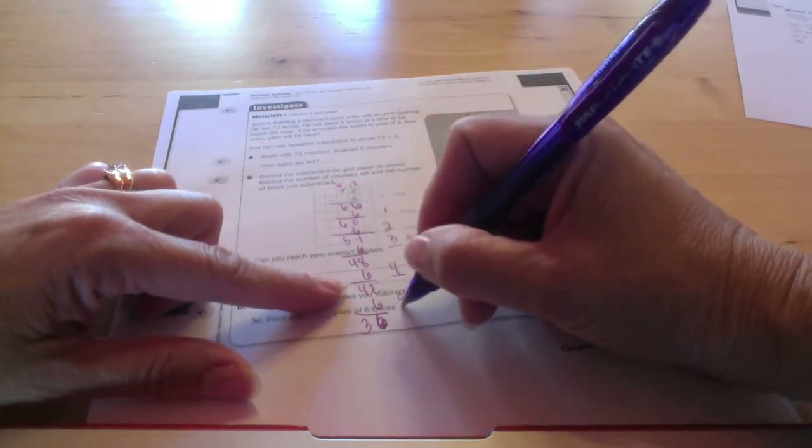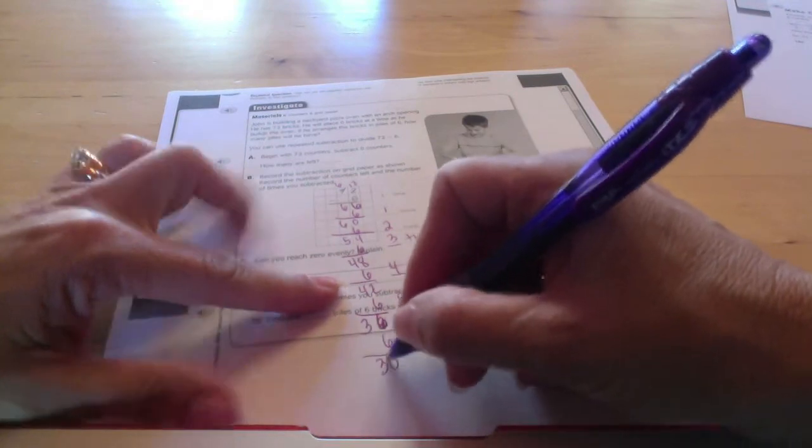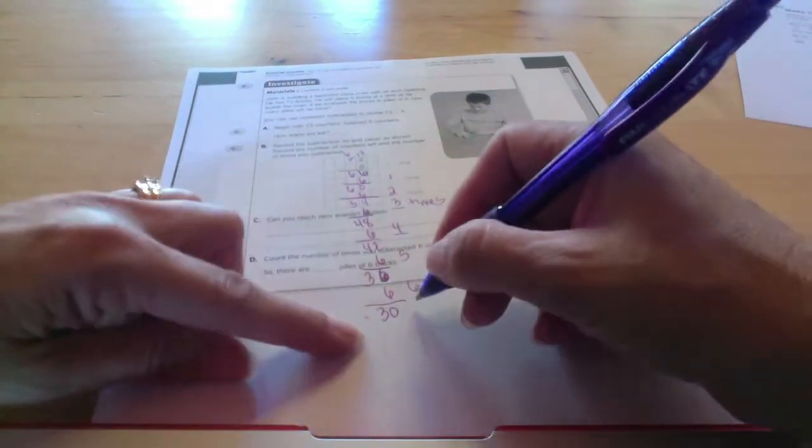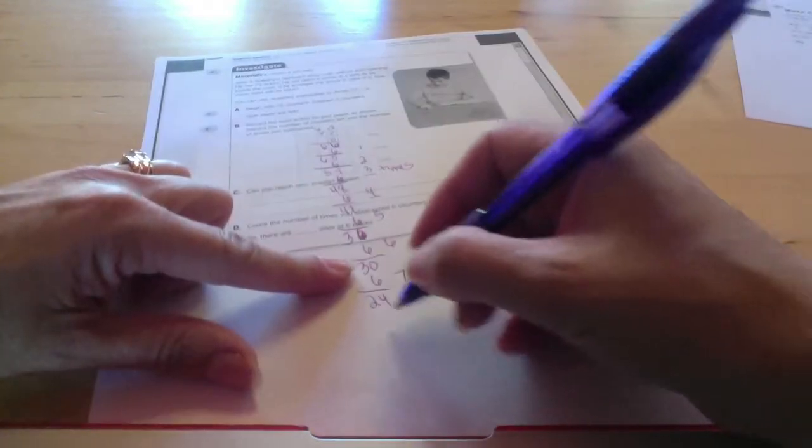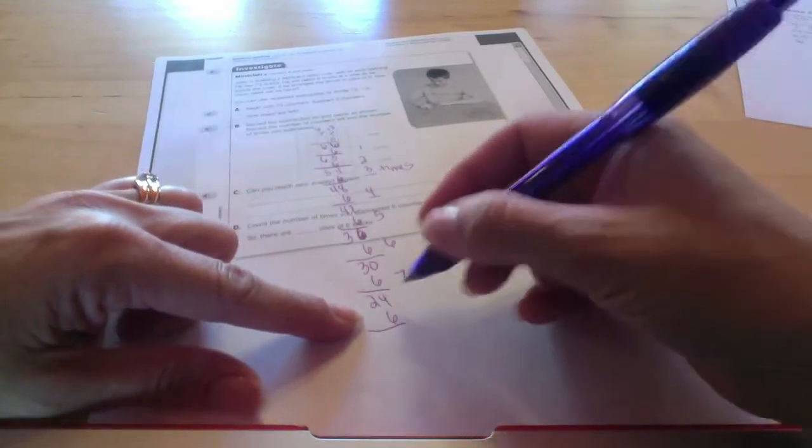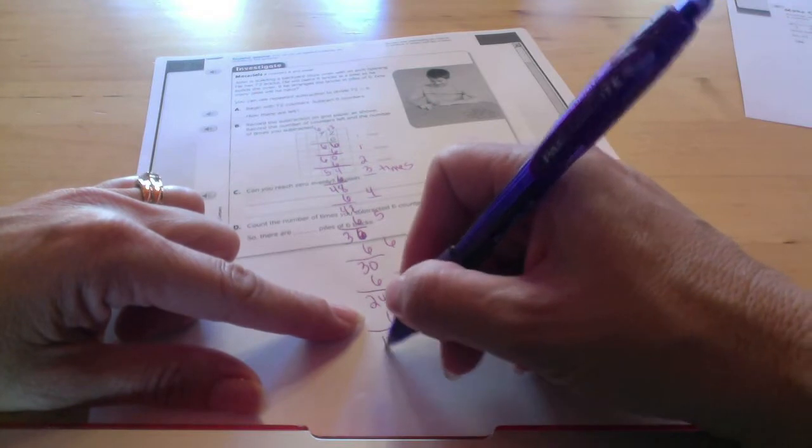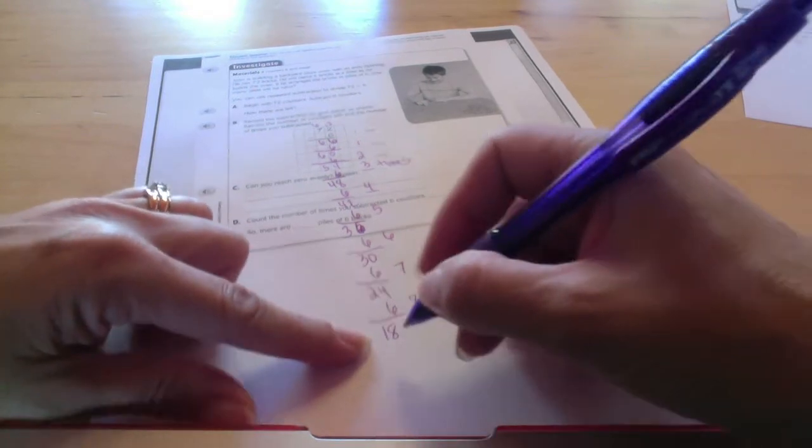Yeah. That was the fifth time, and then we're going to minus six again. That'll be 30. That's the sixth time. Minus six again, that's 24. That was the seventh time. Minus six again, that was an 18. That was the eighth time.